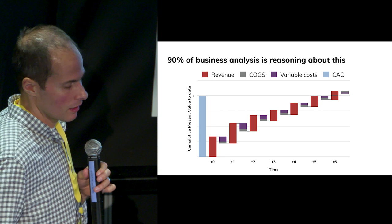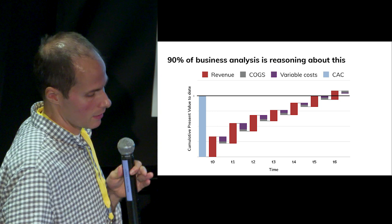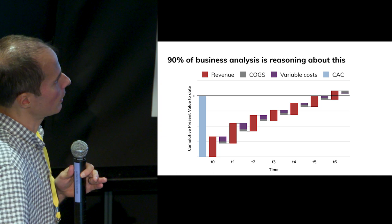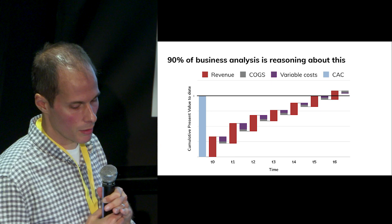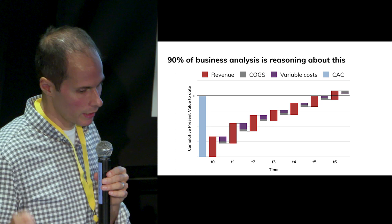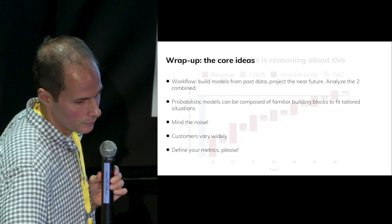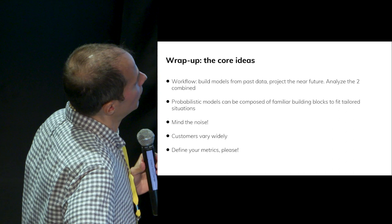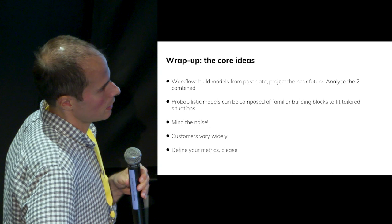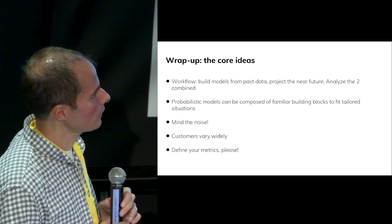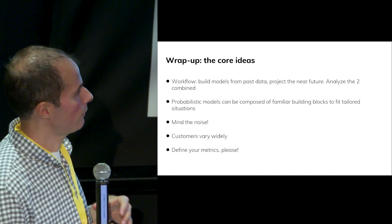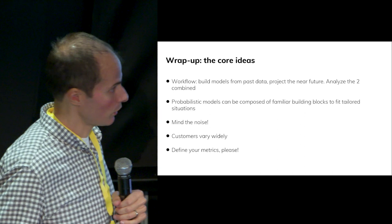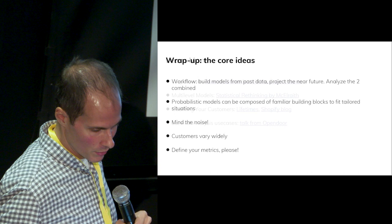Coming back to these models: this lifetime value chart is central to tons of business decision-making — estimating what will happen to a group of customers, finding customers expected to end up well above the y-axis, and operating your business to stay there over time. The key ideas: first, build models from observed data and project forward, then analyze the combination. Second, probabilistic models can tell a good story about your data. Third, heterogeneity abounds, so you must mine the noise. Fourth: please define your metrics.